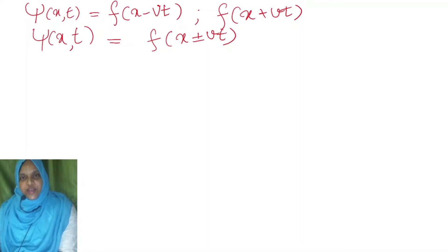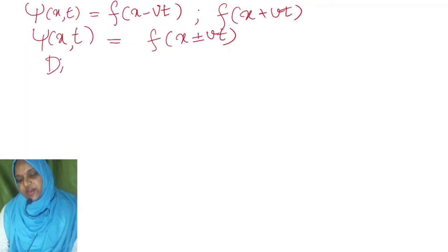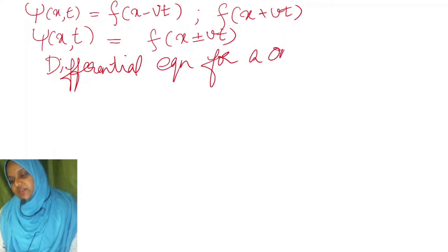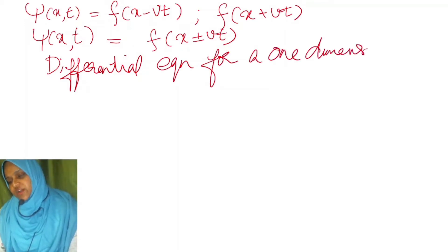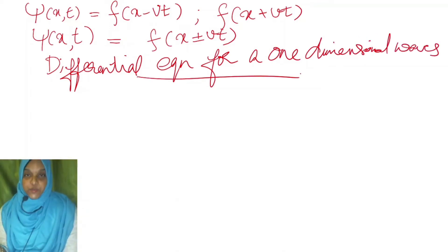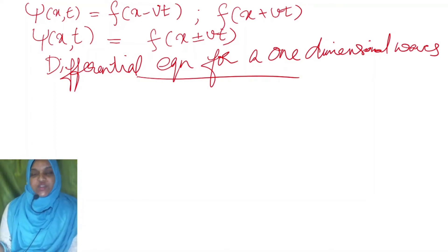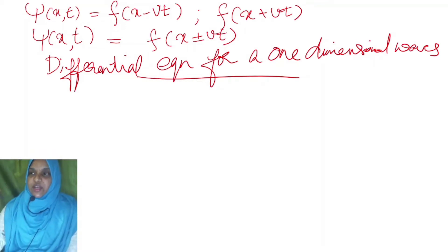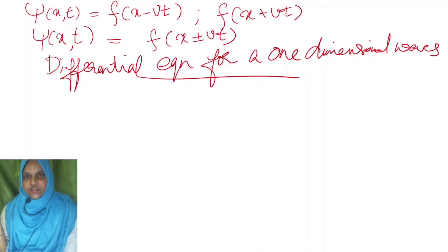Now we are going to derive a differential equation for a one-dimensional wave. What is a one-dimensional wave? As explained in the last video, if a wave is propagating along a one-dimensional medium, it is known as a one-dimensional wave. A one-dimensional medium means the wave propagates along a line — for example, a wave propagating along a string or a spring. Such waves are known as one-dimensional waves.